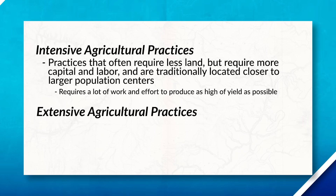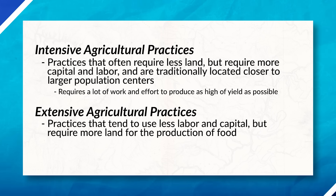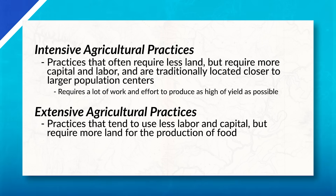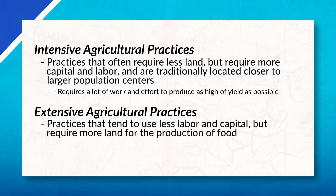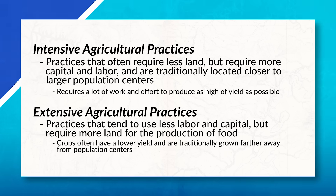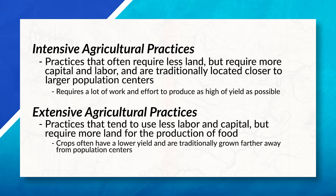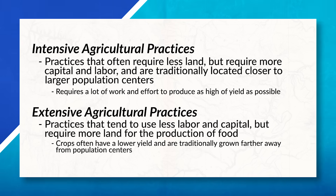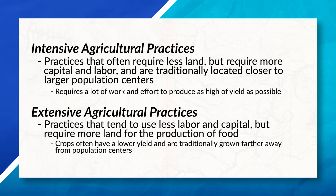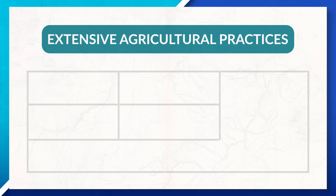Extensive agricultural practices, on the other hand, tend to use less labor and capital, but do require more land for the production of food. Crops often have a lower yield and are traditionally grown farther away from population centers. Today, we can see a variety of extensive agricultural practices around the world.